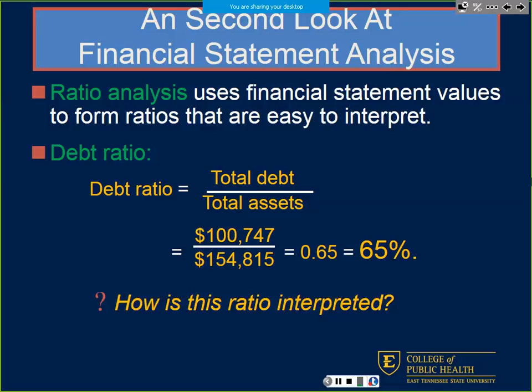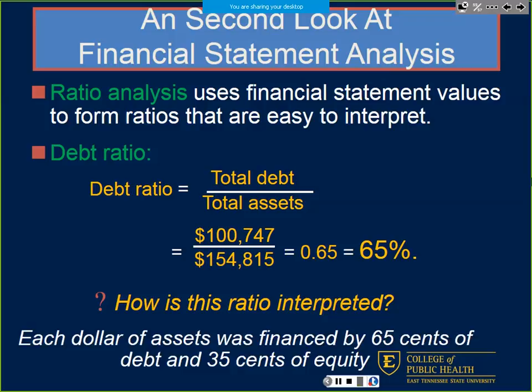What does a debt ratio of 65% mean? For each dollar of our assets, we're going to finance with 65 cents of debt. For every dollar we take out, we're going to have 65 cents in debt and 35 cents in equity to finance that.